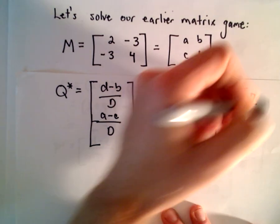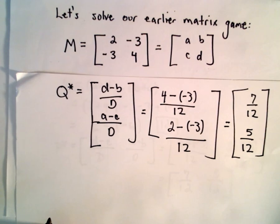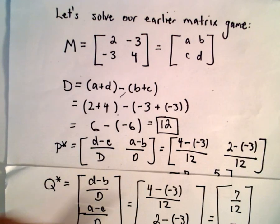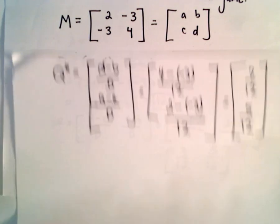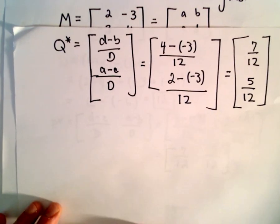So it looks like the probabilities for both P star and Q star are actually working out to be the same, the respective probabilities. It's not necessarily going to happen all the time.